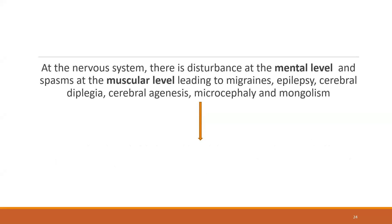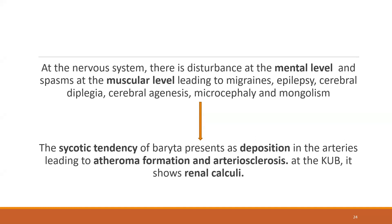At the nervous system level, there is disturbance at the mental level, spasms at the muscular level, leading to migraine, epilepsy, cerebral diplegia, agenesis, microcephaly, and mongolism. The psychotic tendency has atheroma formation and arteriosclerosis.